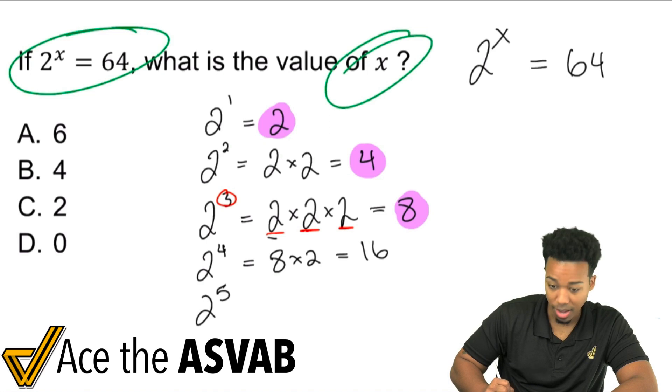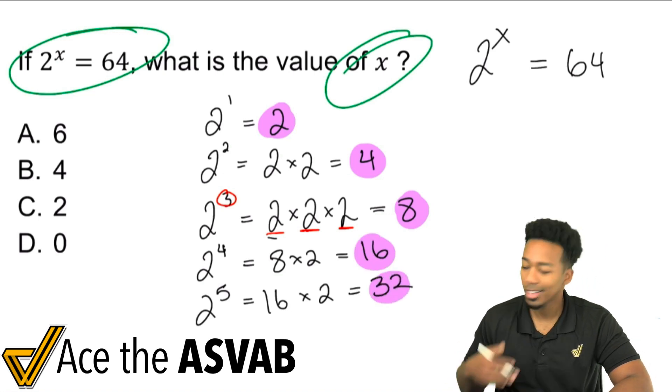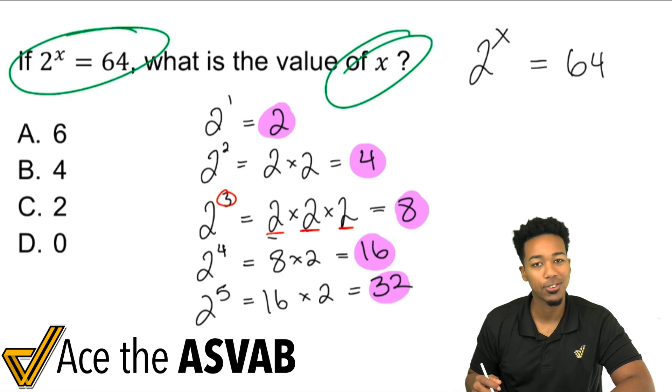And you keep going. 2 to the power of 5, that's going to be 16 times 2, and that'll be 32. So notice the patterns that are happening here. All we're doing is multiplying another 2.